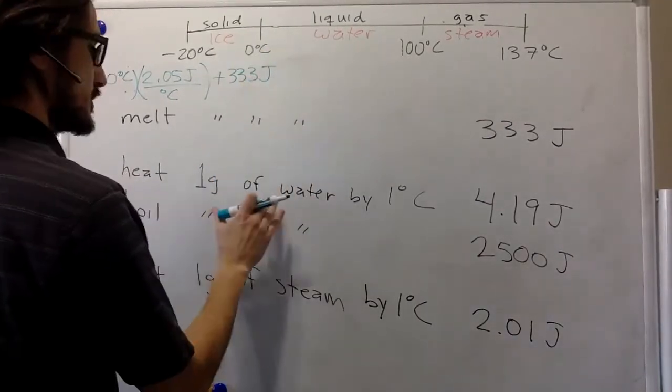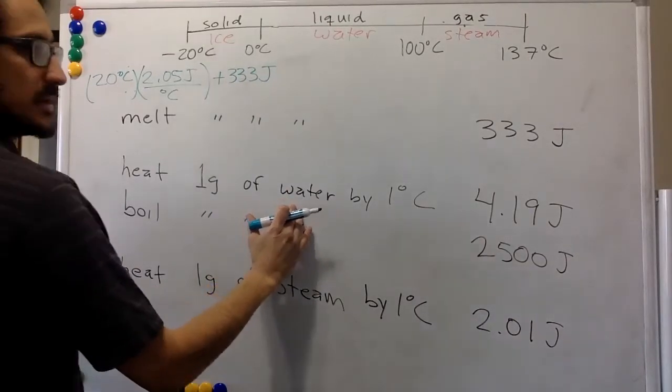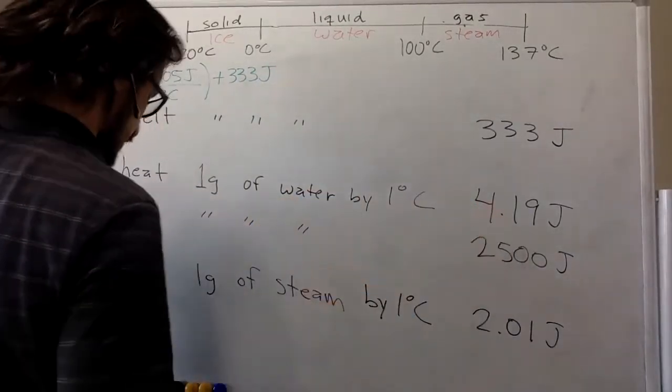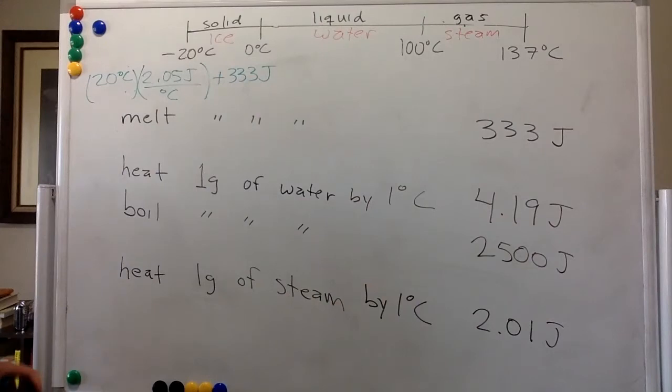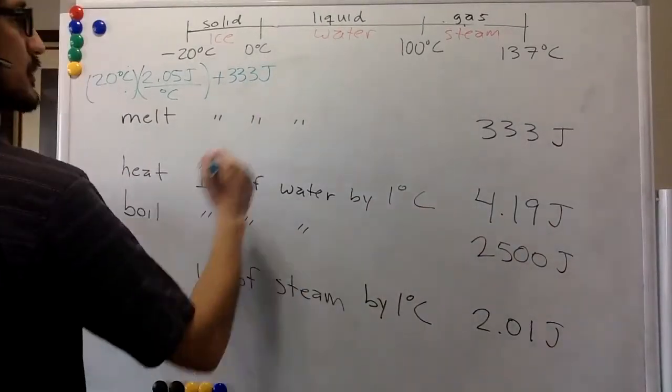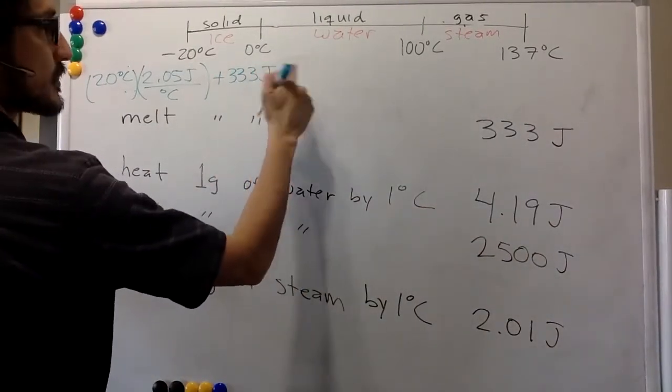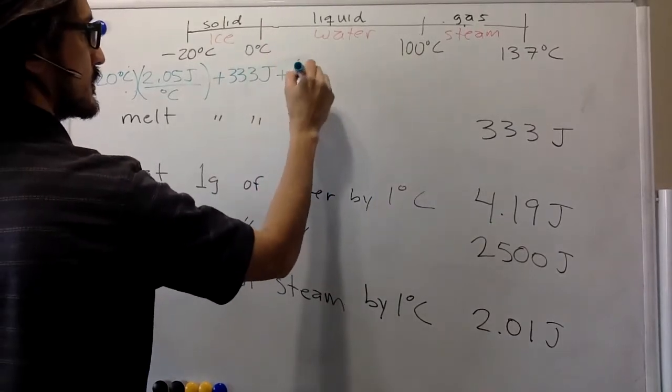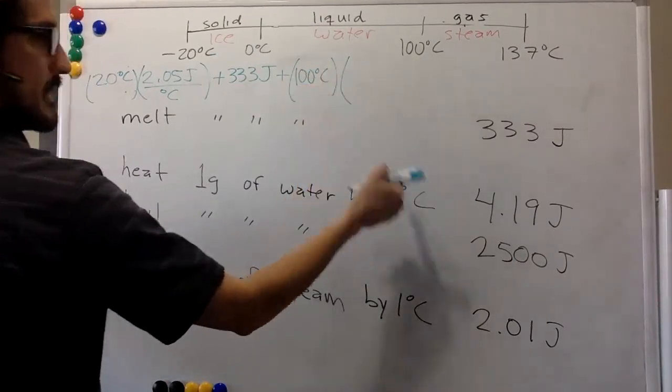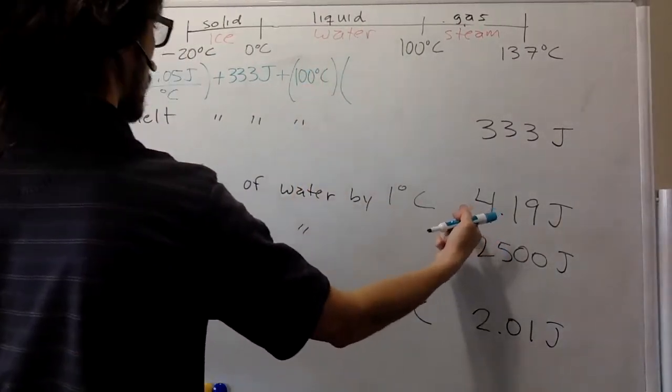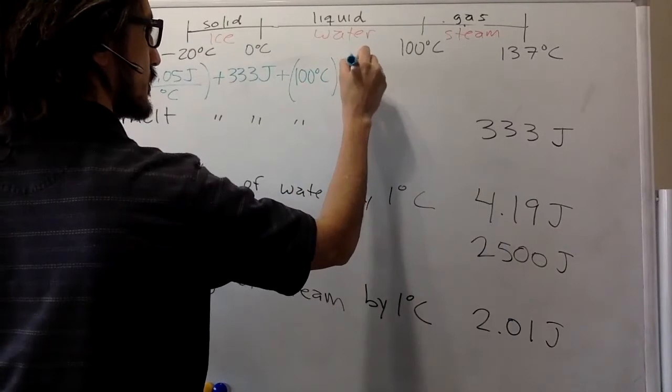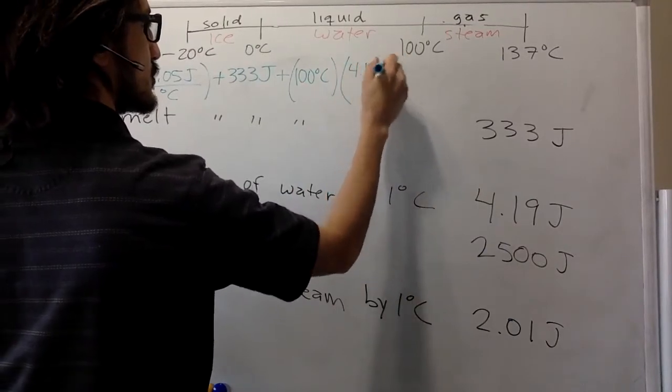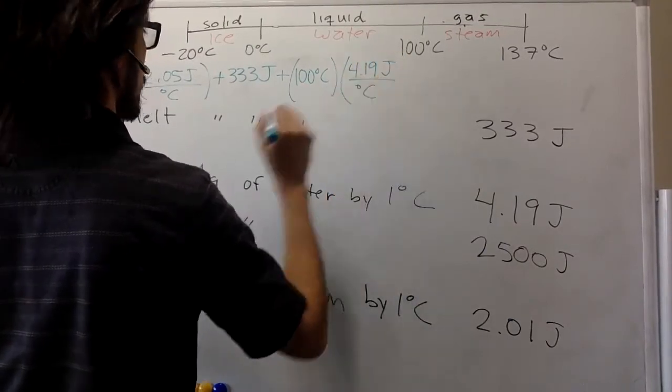And now you're in the liquid phase. And now these numbers are the ones that matter. So this will be 100 minus zero, that's 100 Celsius. And now we have 4.19 joules per degree Celsius.